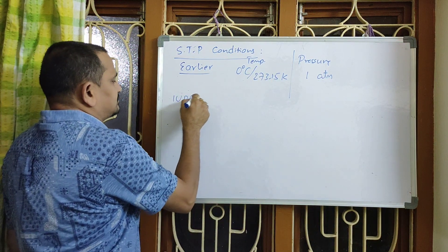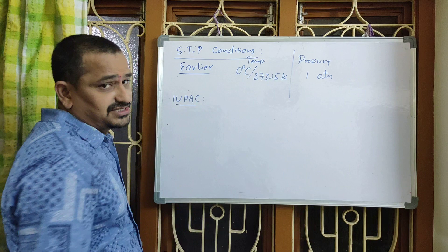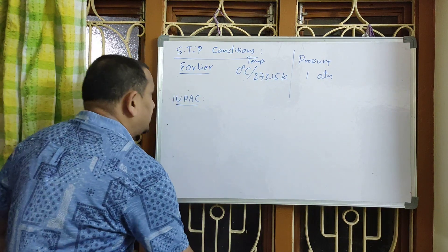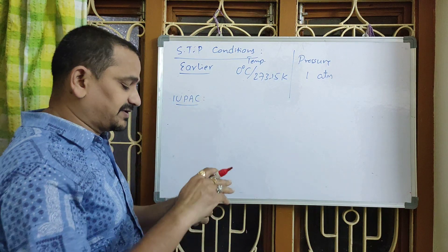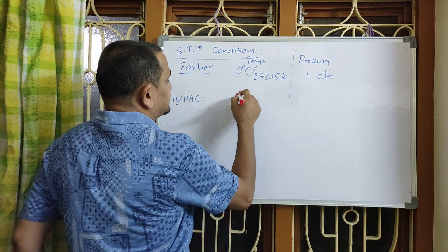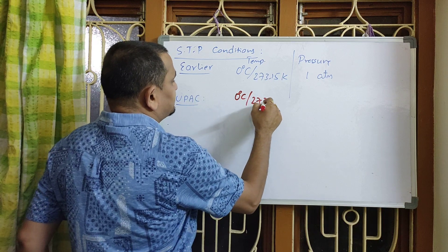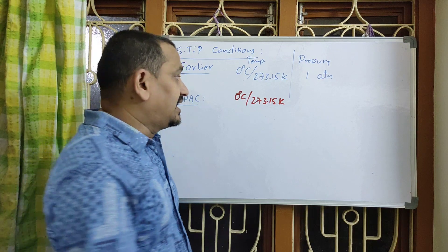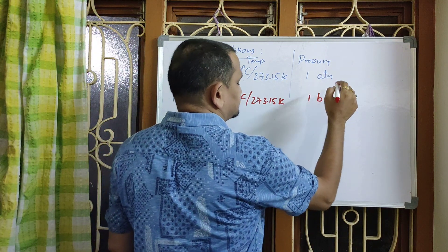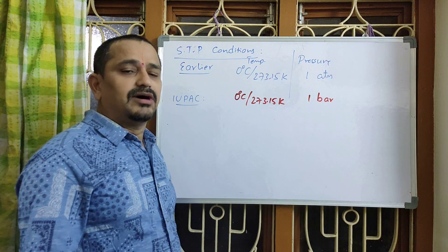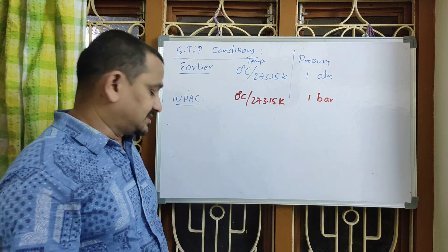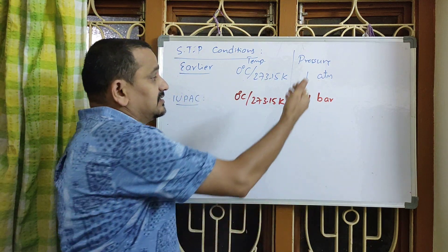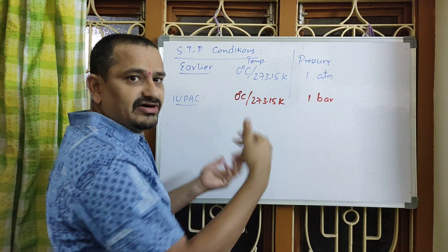Now IUPAC modified these values. You know the full form of IUPAC — International Union for Pure and Applied Chemistry. According to which, the modified values of standard temperature and pressure are 0 degree Celsius or 273.15 Kelvin temperature, and 1 bar pressure. We have to remember these values, and we are going to study the conversion of atmosphere to bar and vice versa.